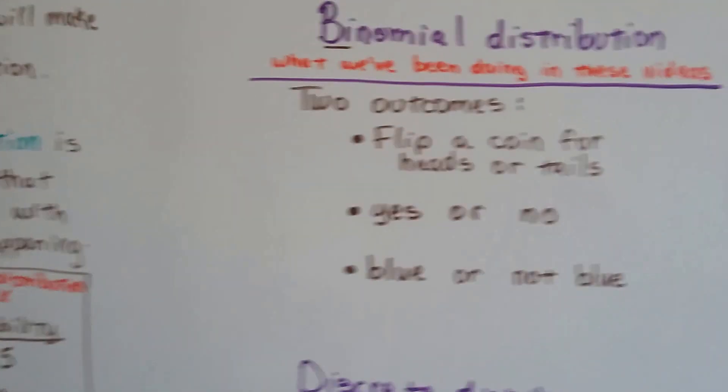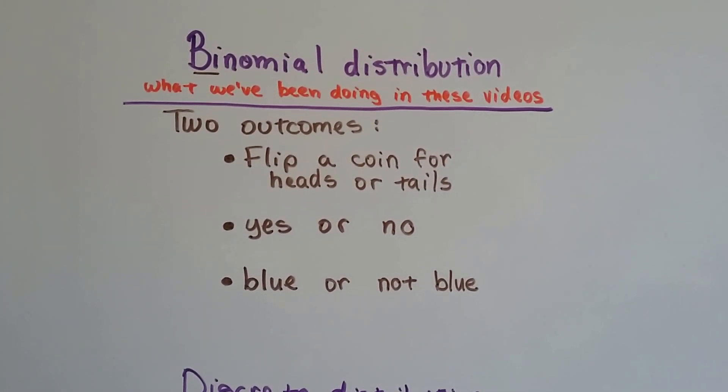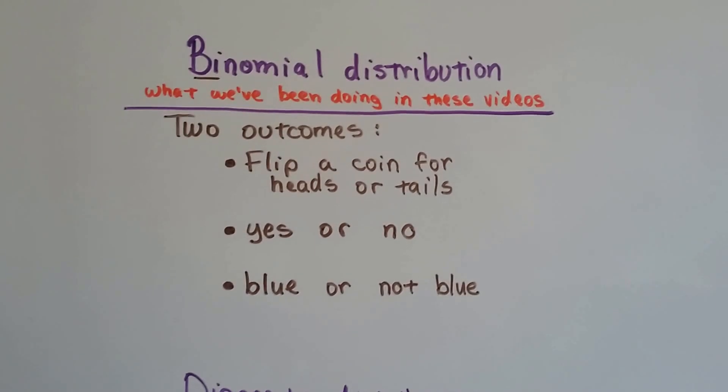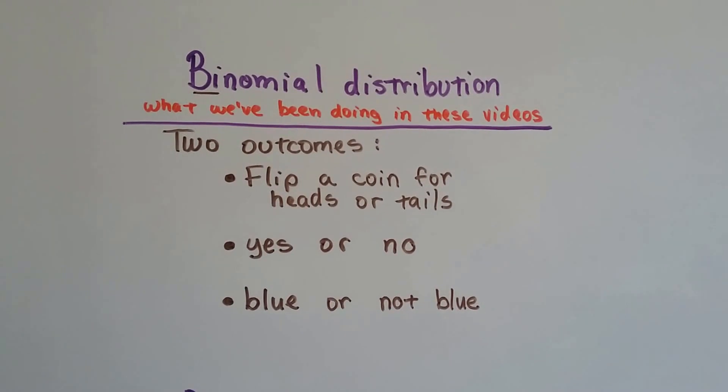Now there's binomial distributions, and that's pretty much what we've been doing in all of our videos so far. There's two outcomes: we flip a coin to get heads or tails, or we find out if it's yes or no, or if it lands on blue or not blue.